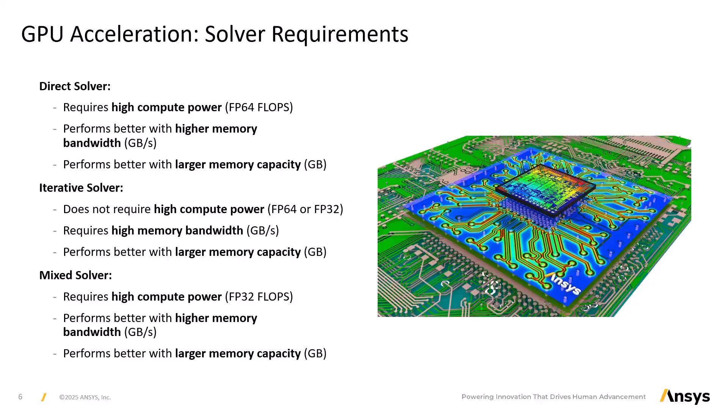This is what you should look for in GPUs depending on your chosen solver to optimize your simulations. The direct solver requires high compute power in FP64 FLOPs and performs better with higher memory bandwidth and larger memory capacity. Iterative solvers require high memory bandwidth and also perform better with larger memory capacity, but do not necessarily need high compute power in either FP64 or FP32. The mixed solver requires high compute power in FP32 FLOPs in particular, and also performs better with higher memory bandwidth and larger memory capacity.